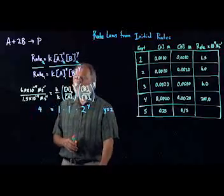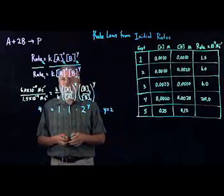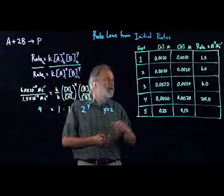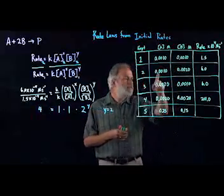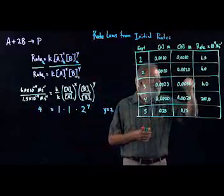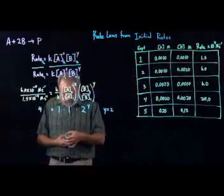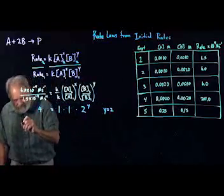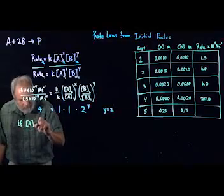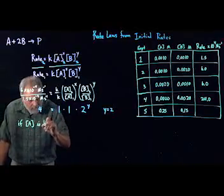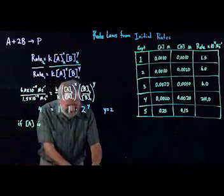I'm going to do the shortcut method on this. If the ratio is 2 and the rate goes up by a factor of 4, let me write down a declarative sentence. If A is doubled, rate increases by 4.